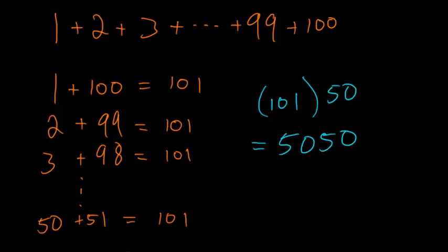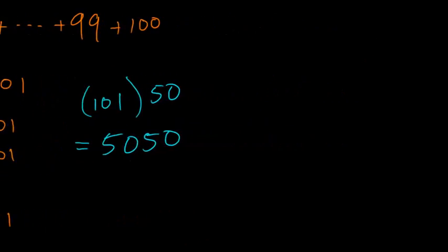So one thing we could do now is to generalize this. Like let's say I wanted to add up the first 1 million numbers. So before we answer that question, let's first look at just a general sum of the first n numbers. 1 plus 2 plus 3 plus all the way up to plus n minus 1, and then plus n.